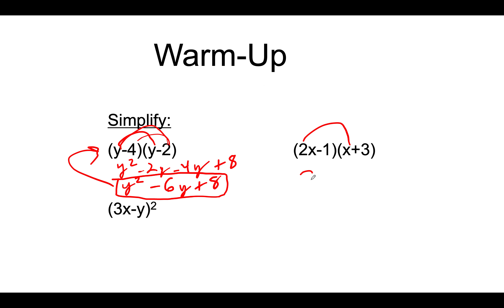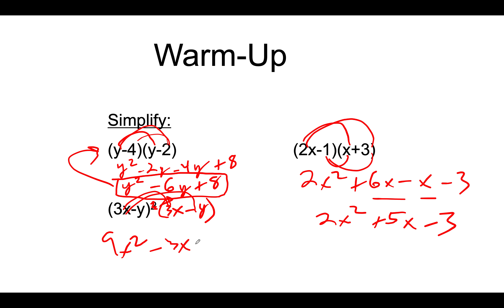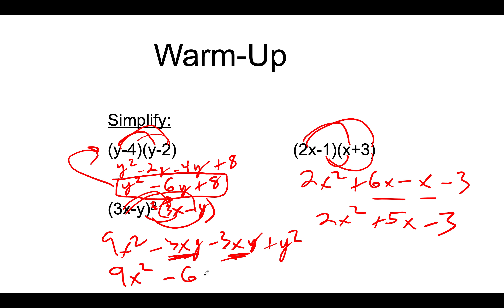This would be 2x squared plus 6x minus x minus 3 — combine those two like terms in the middle, and it's really those middle terms that cause us some stress that we'll work through. Remember, when you're squaring a binomial, that means you're multiplying it by itself. We'll learn a quicker trick for this later. Notice: 9x squared minus 3xy minus 3xy plus y squared — when you're squaring something you end up with those two repeated middle terms. Spoiler alert: that will always happen.